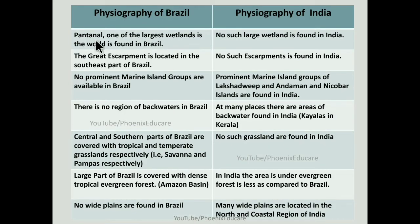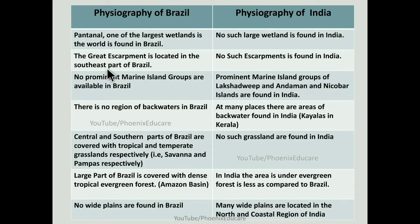Pantanal, one of the largest wetlands in the world, is found in Brazil. This is a wetland or swampy land available in Brazil, but no such large wetland is found in India. The Great Escarpment is located in the southeastern part of Brazil, and no such escarpment is found in India.